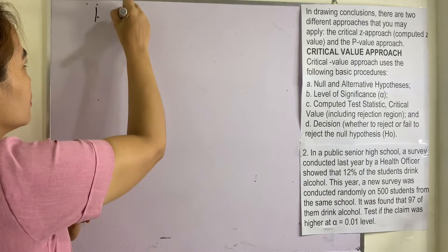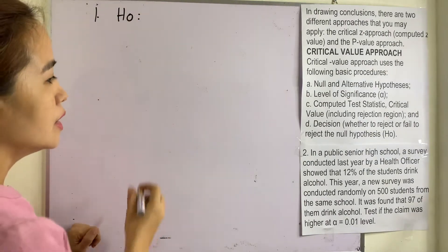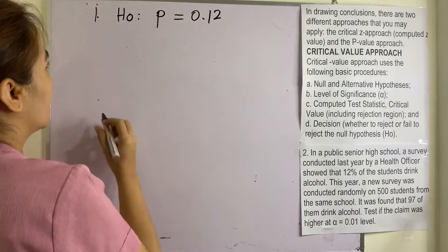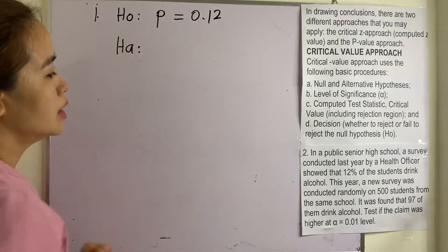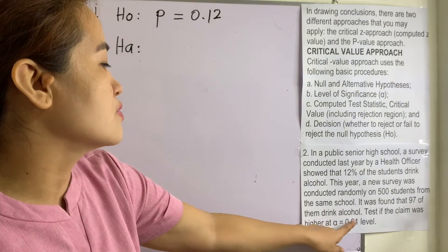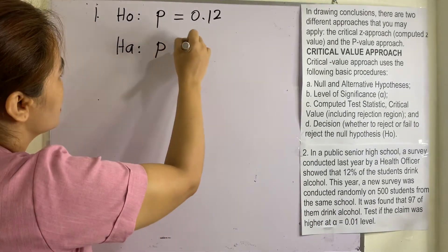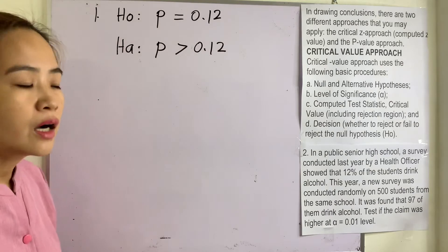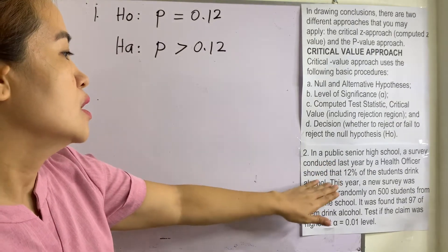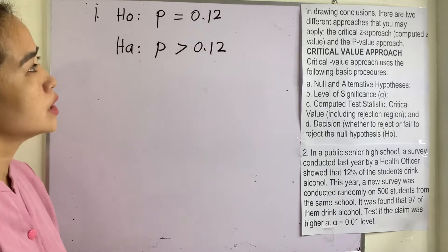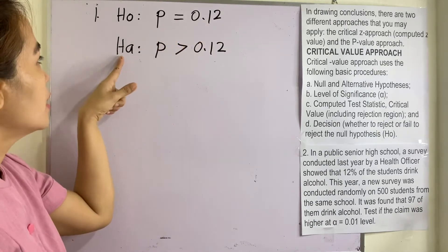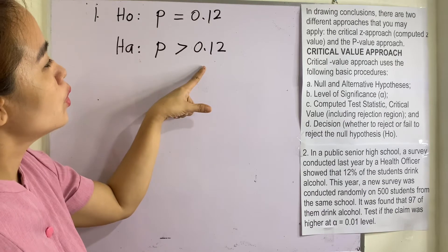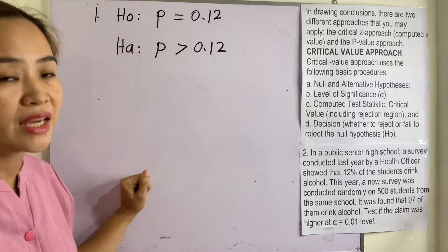Number one: formulate the null and alternative hypotheses. The null hypothesis is p = 0.12, meaning the proportion of students who drink alcohol is 12%. The alternative hypothesis — since the claim is higher — is p > 0.12, meaning the proportion of students who drink alcohol is greater than 12%.